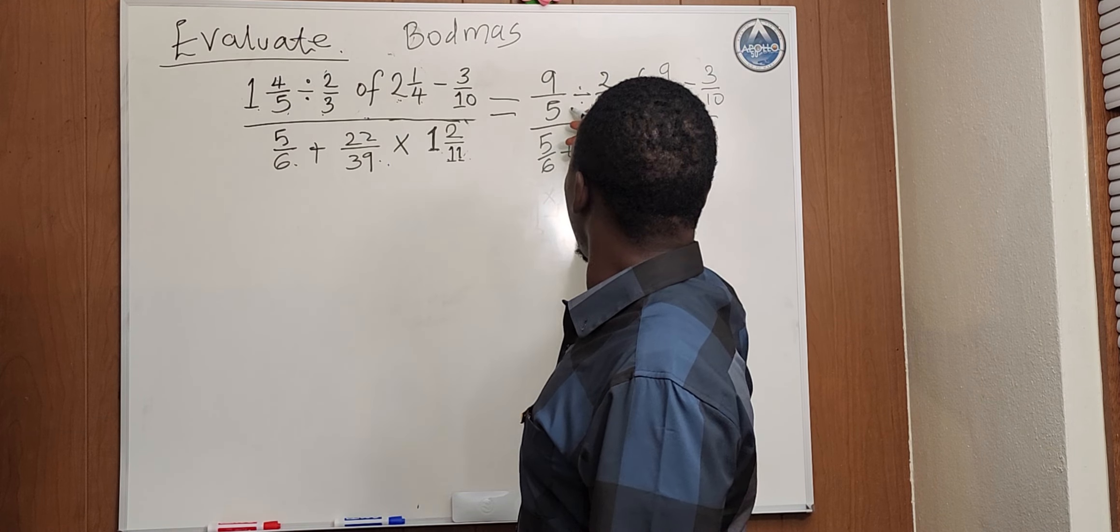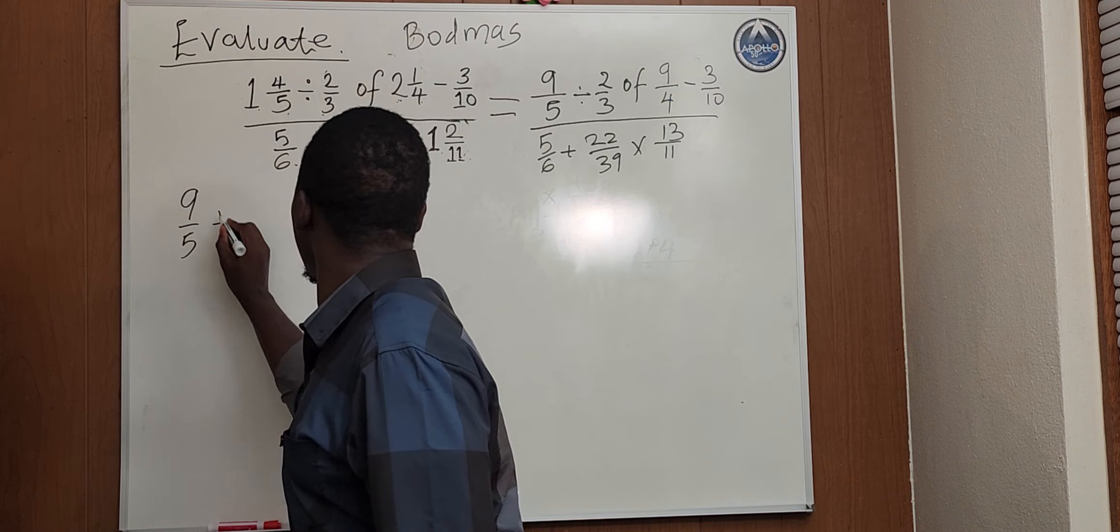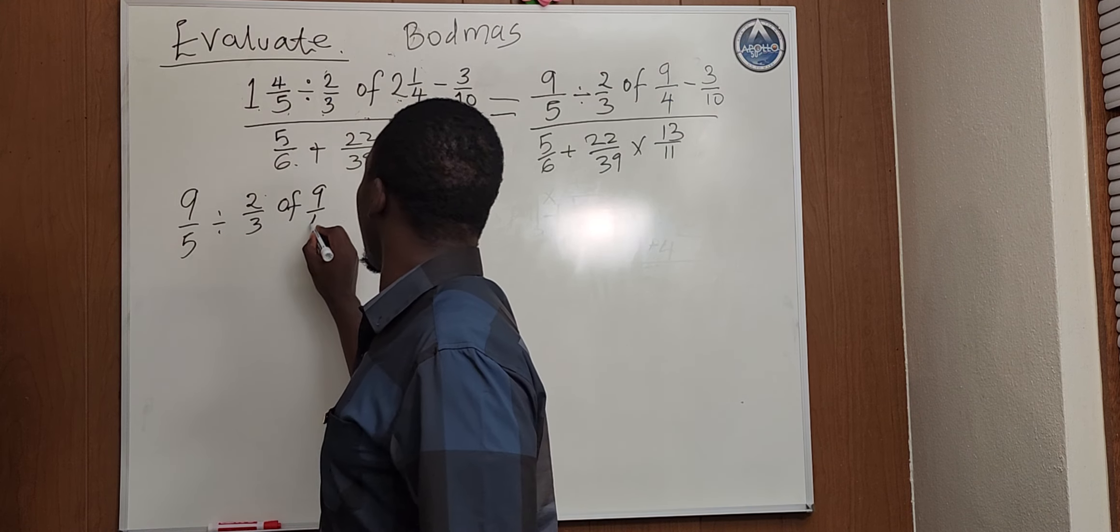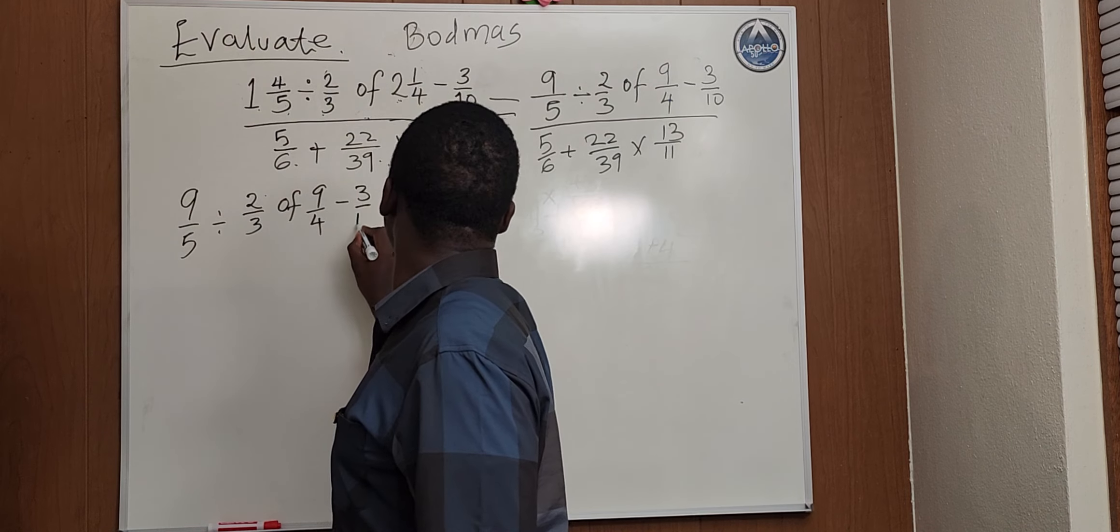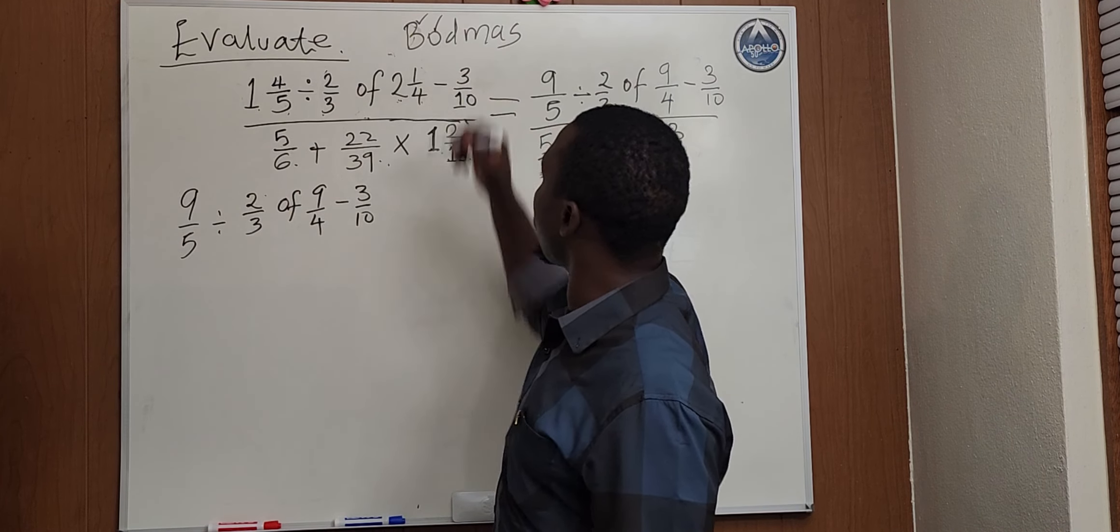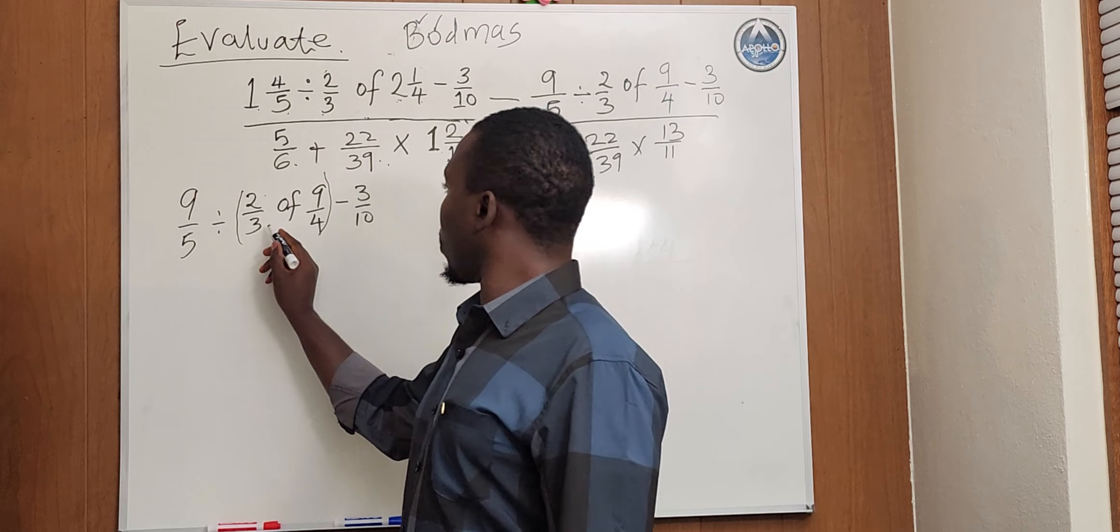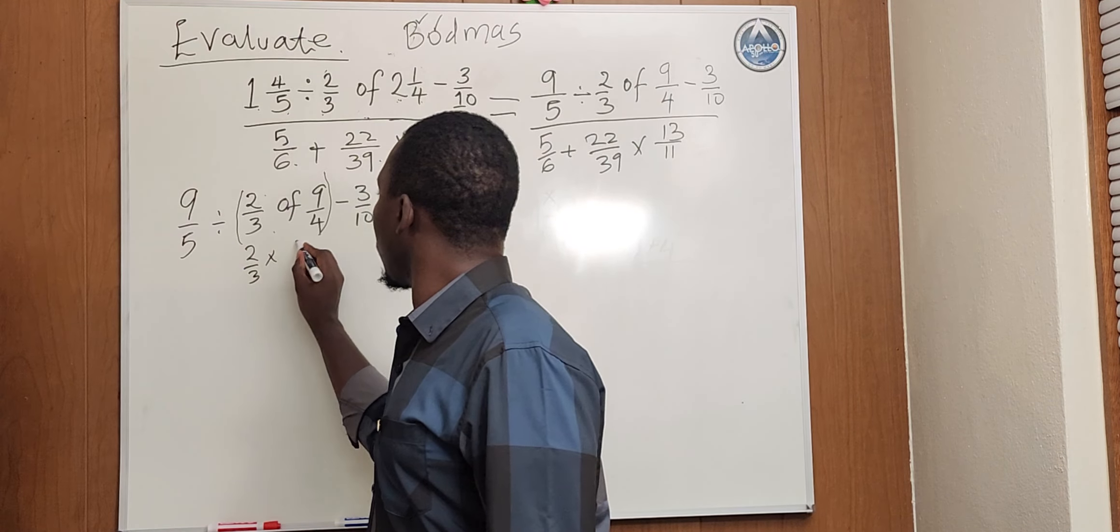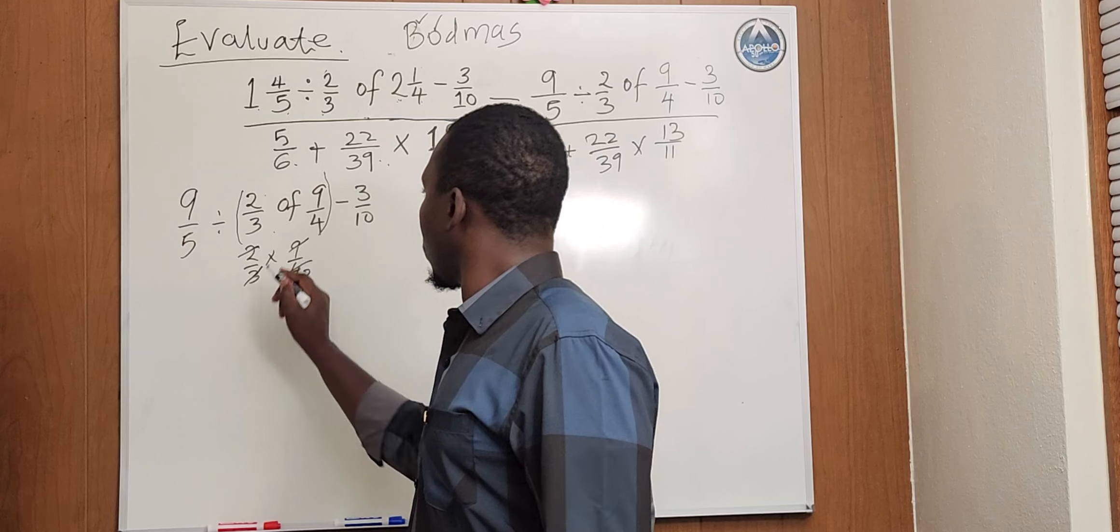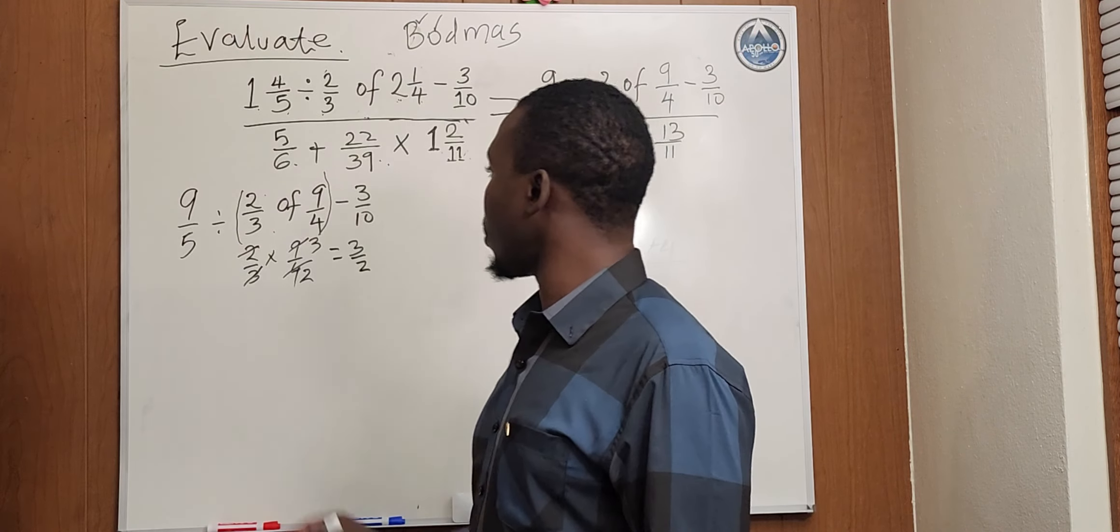First of all, from the numerator here, we'll get 9 over 5 divided by 2 over 3 of 9 over 4 minus 3 over 10. So we start the first operation with brackets. We don't have brackets but we have one of operations of right here. We'll handle this first. This is the same as 2 over 3 times 9 over 4. When we divide here and we cancel out, we'll get 3 over 2 as the final answer.